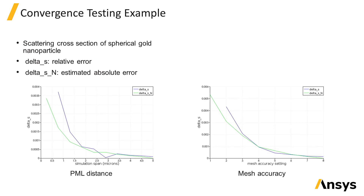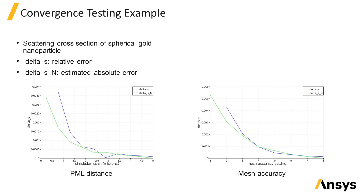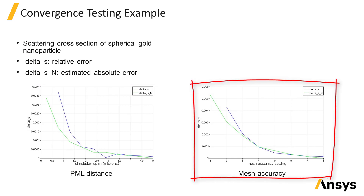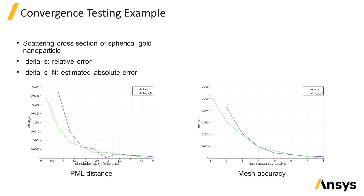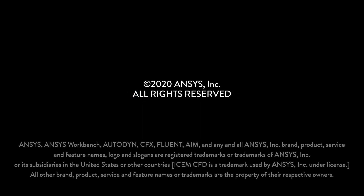These plots show the relative and absolute error in a nanoparticle scattering simulation as the distance between the structure and PML is increased by increasing the simulation span, and as the mesh is made finer by sweeping the mesh accuracy setting. From these plots you can determine the necessary simulation span and mesh accuracy needed to meet the acceptable level of error.